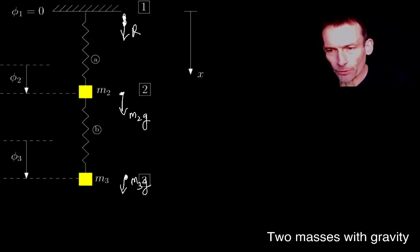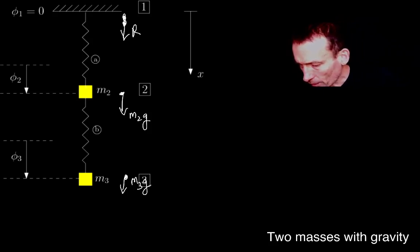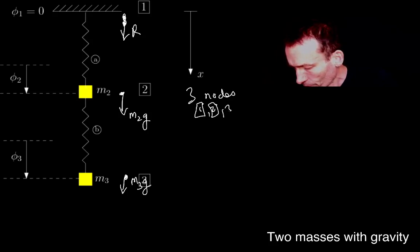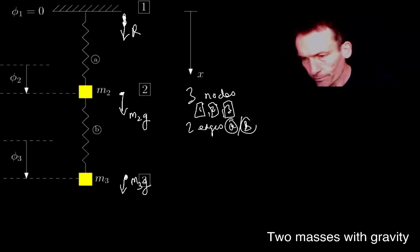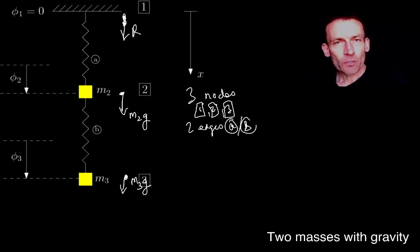Now look, I've shown you, I've introduced three nodes here. So we've got three nodes, 1, 2 and 3, in the same way, and two edges, A and B. So our graph, we know what our graph is, and we've got three node variables, therefore.